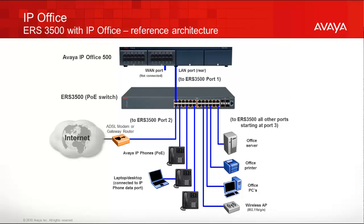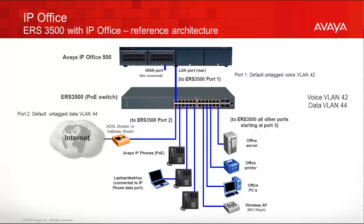Note that by default, the IP Office script will add voice VLAN 42 and data VLAN 44. Port 1 will be provisioned as an untagged voice VLAN member, port 2 will be provisioned as an untagged data VLAN member, while all other ports from port 3 onward will be provisioned with both the voice and data VLAN, where the voice VLAN will be tagged.